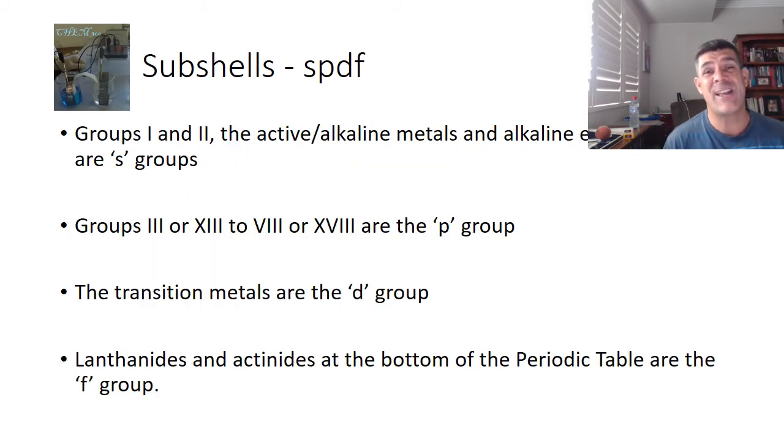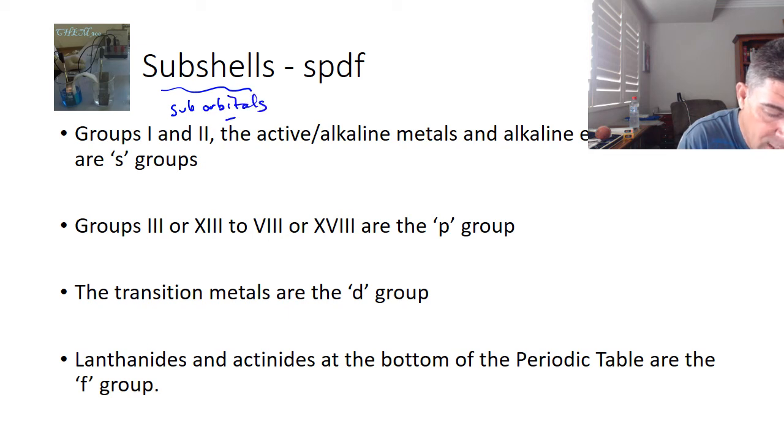So, what's actually going on? What's actually going on are what we might refer to as subshells, or sub-orbitals. Now, these can get quite tricky, and I will go into them in a little bit more detail later on. But, the great thing about these is that the periodic table is set up in such a way that you can easily identify where each of these is.